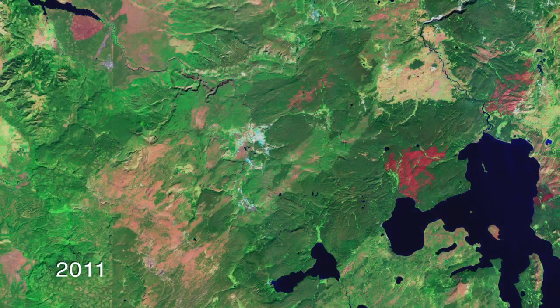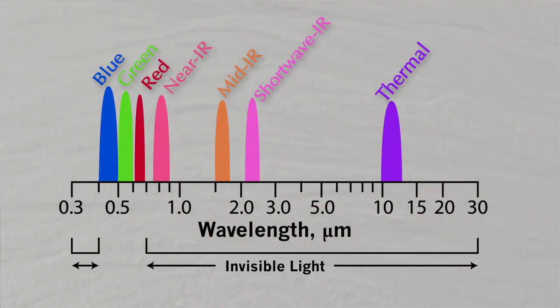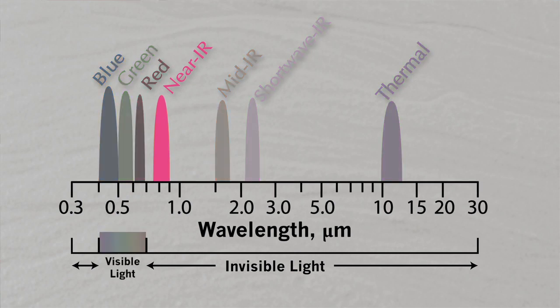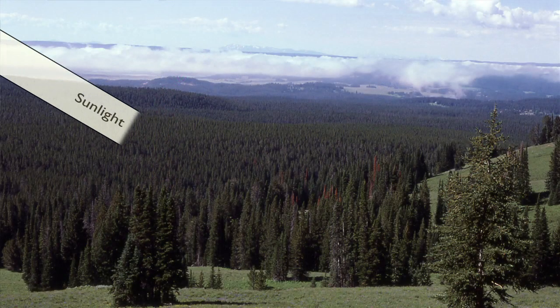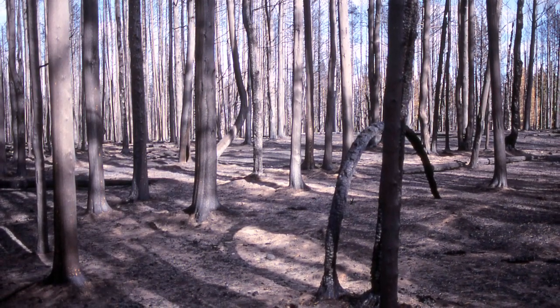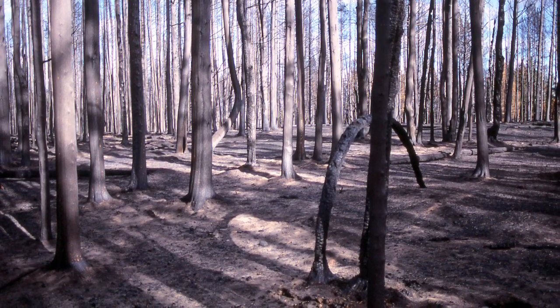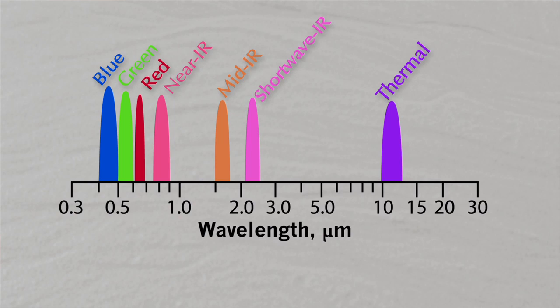Landsat actually images the Earth using a variety of spectral bands in different wavelengths. Some of these wavelengths are not visible to the human eye, but are very useful for assessing the composition of the land surface. The near-infrared wavelength, for example, is sensitive to leaf area because the chlorophyll in leaves tends to reflect a lot of light in the near-infrared. The reflectance of the fire scars tends to be dominated by the char left on the ground, and that char, initially, tends to be fairly bright in the short-wave infrared.